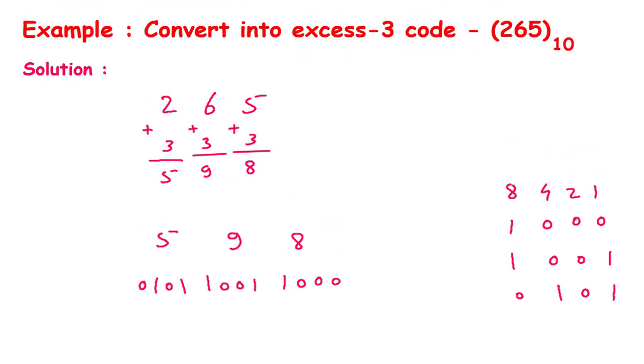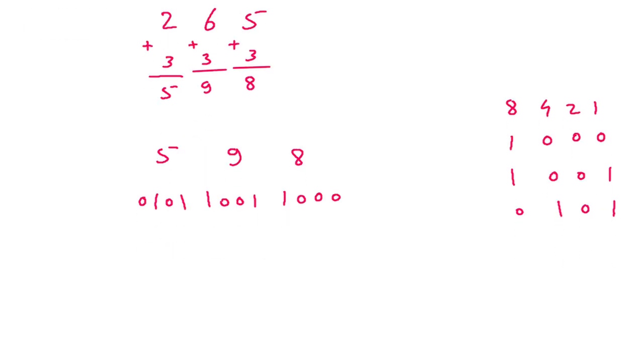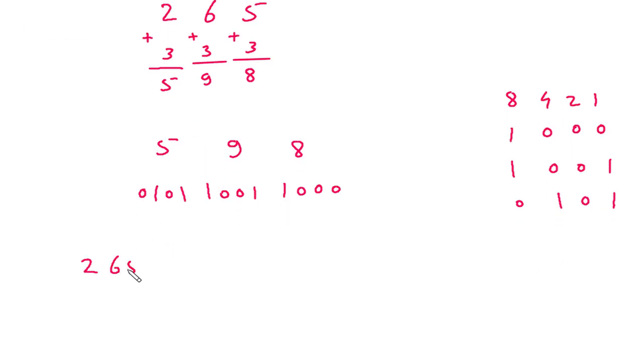Therefore, 265 decimal is equal to 0, 1, 0, 1, 1, 0, 0, 1, then 1, 0, 0, 0 to the base XS3. Because this is the XS3 code, its base will be XS3.